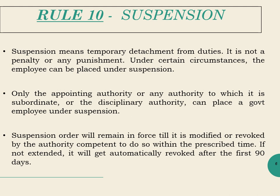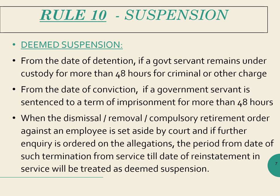Once a suspension order is issued, it has to be reviewed on completion of 90 days, failing which it will automatically get revoked. When a government employee is under detention for more than 48 hours, or given an imprisonment term, or given a penalty of dismissal or removal or compulsory retirement which is set aside by a court and the employee is later reinstated, the intervening period will also be treated as deemed suspension. Remember, suspension and deemed suspension are two different things under two different circumstances.